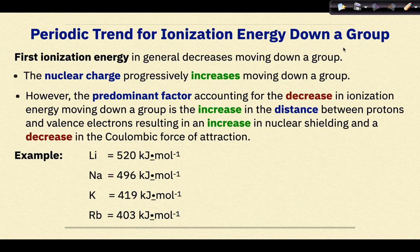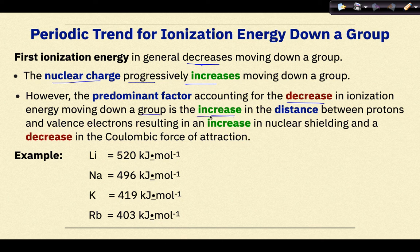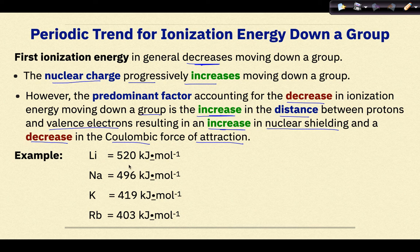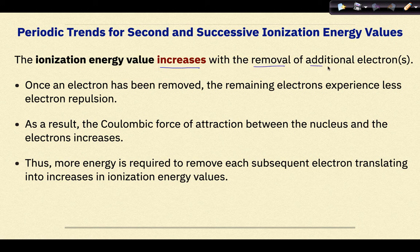Periodic trends for ionization energy down a group: first ionization energy in general decreases moving down a group. The nuclear charge progressively increases moving down a group, but the predominant factor accounting for the decrease is the increase in the distance between protons and valence electrons, resulting in increased nuclear shielding by core electrons and a decrease in the Coulombic force of attraction. We can see this trend in the Group 1 metals: lithium is 520, sodium is 496, potassium is 419, and rubidium is 403 kilojoules per mole.